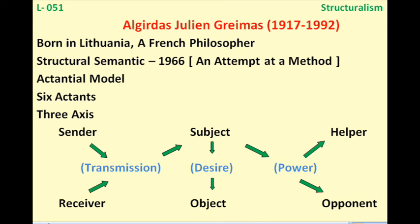He names the six actants as: subject, object, helper, opponent, sender, and receiver. The subject is much like a hero — the main central character. The object is his interest, such as his desire or his love interest, perhaps the heroine. The helper is quite obviously the person who helps the hero. The opponent is like a villain, always there to create problems for the hero.